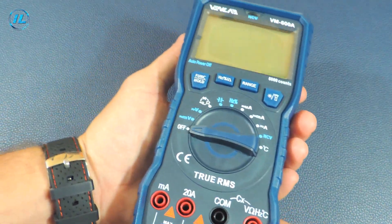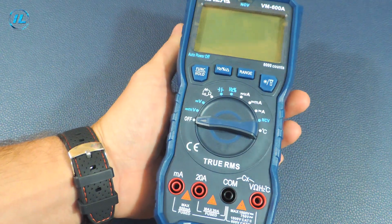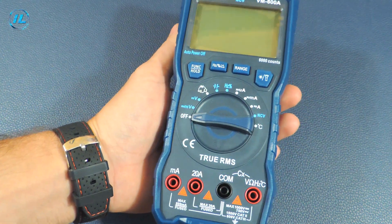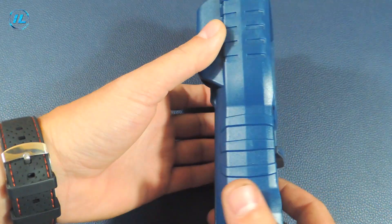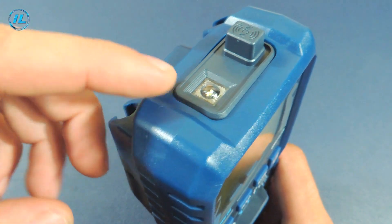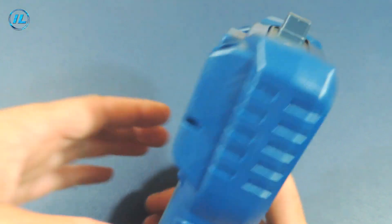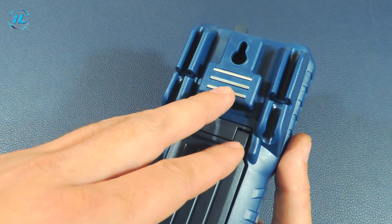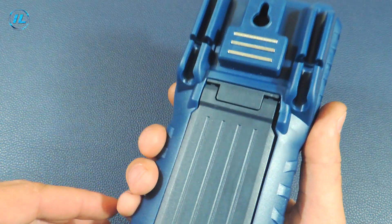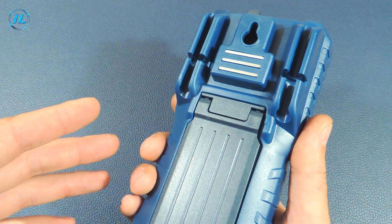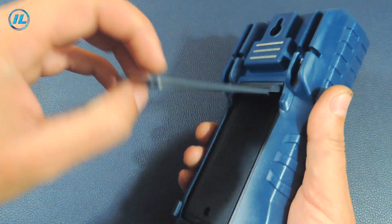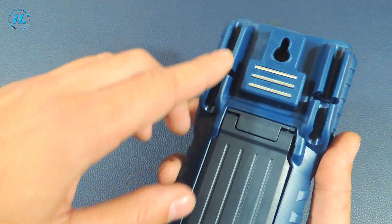And here is the multimeter itself. It has a fairly large size but it is not too heavy and fits comfortably in your hand. In the upper part of the multimeter there is a flashlight and an electric field sensor. There is a powerful magnet on the back side so that you can fix this device on any metal surface. There is also a stand and a mount for the probes.